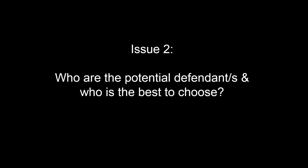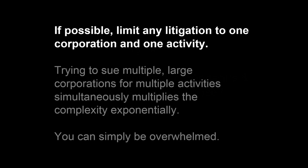The second issue is who are the potential defendants and who is best to choose. A practical point: if possible, limit any litigation to one corporation and one activity. If you try to sue multiple large corporations for multiple activities simultaneously, you multiply complexity exponentially and can simply be overwhelmed — multiple massive legal teams throwing all their resources at you with correspondence, procedural obstacles, and appeals. So if possible, limit any litigation to one corporation and one activity.